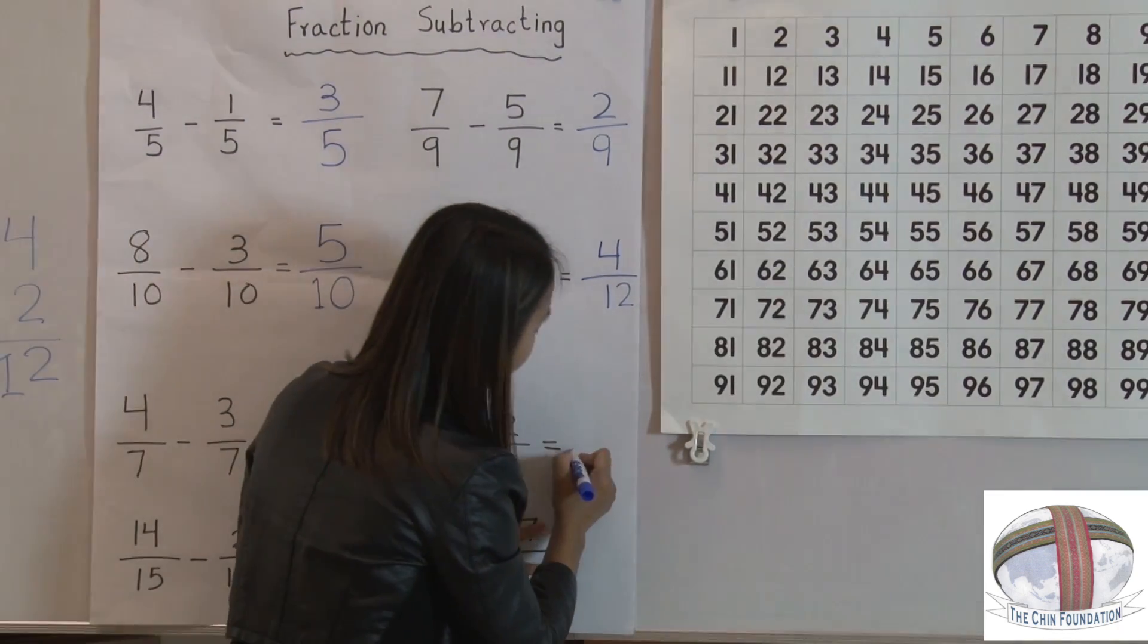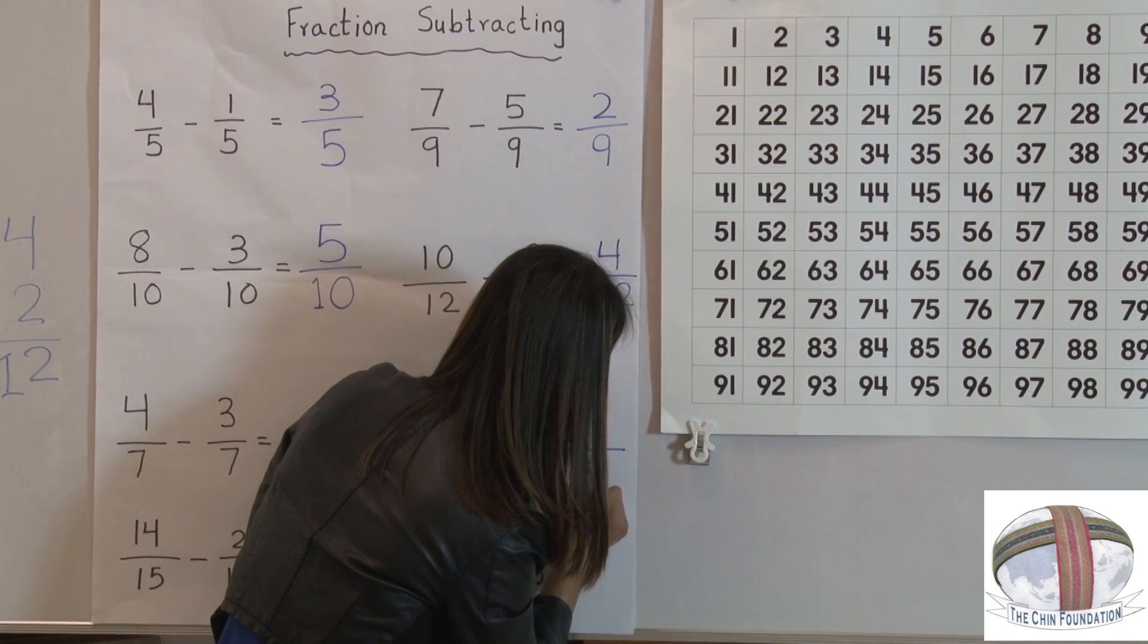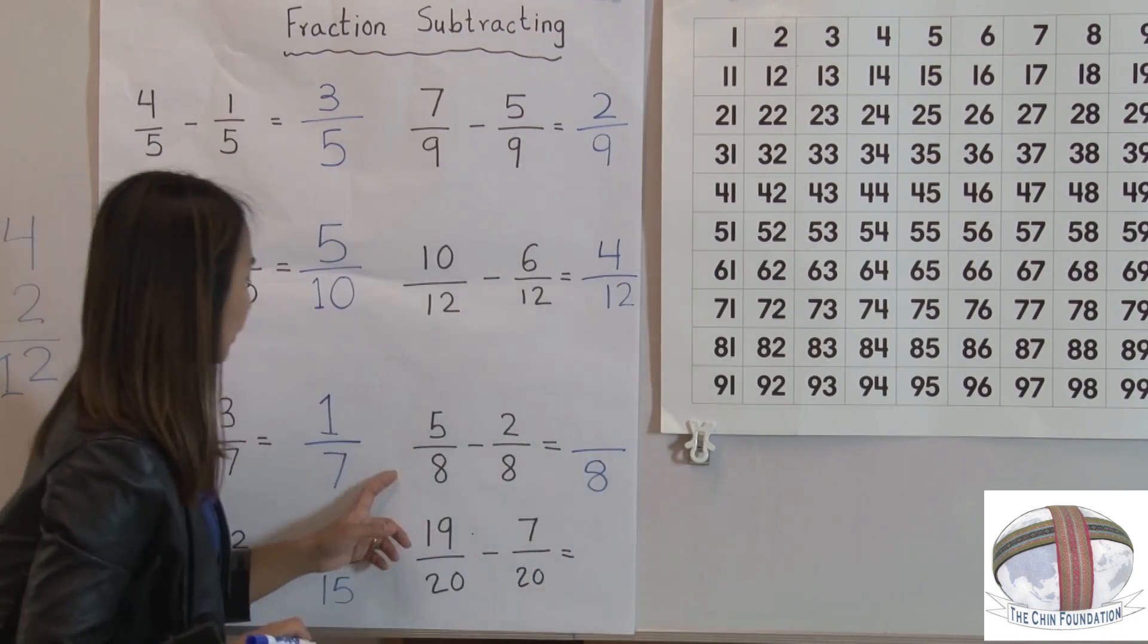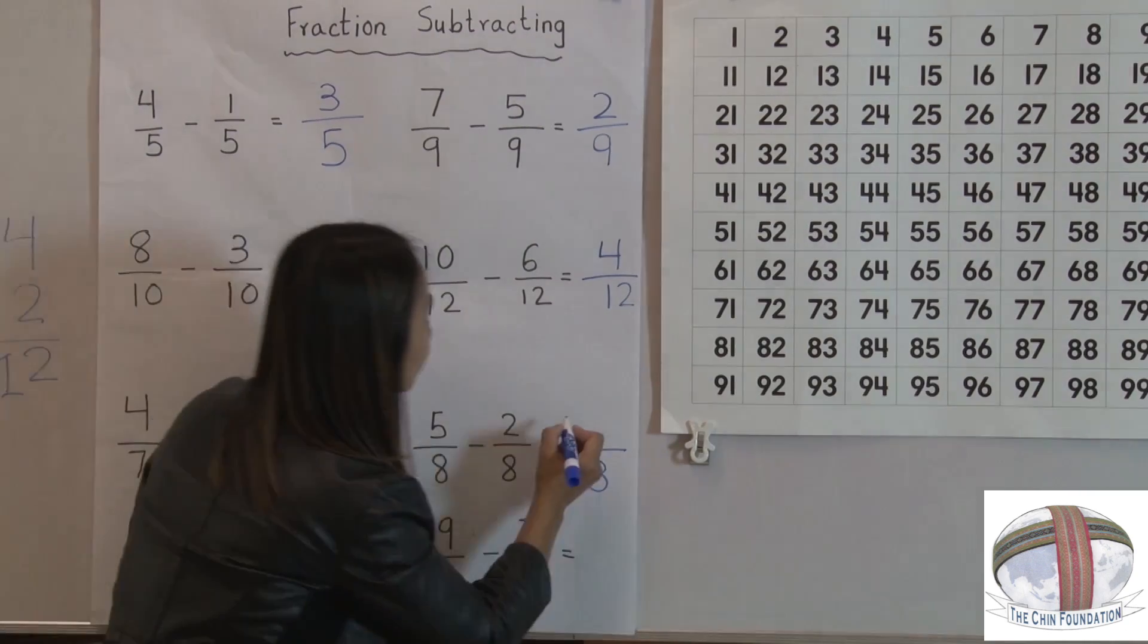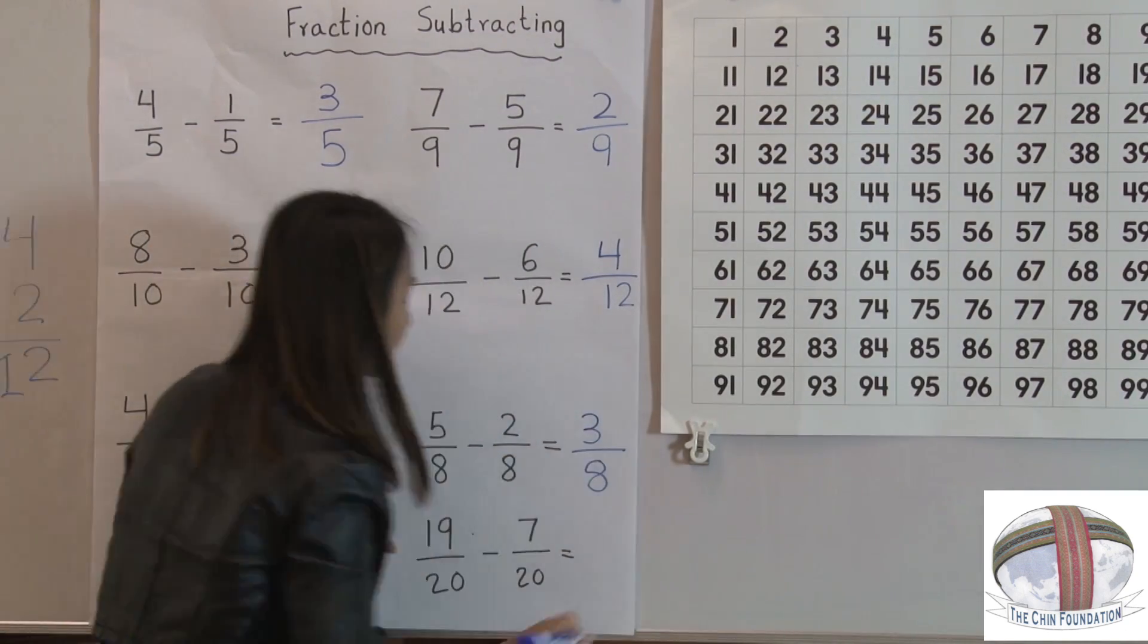It's still the same. The denominator is the same. So we just need to write 8. 5 take away 2, which is 3.